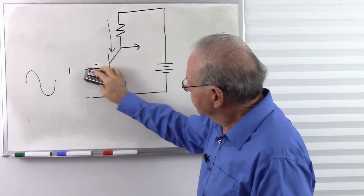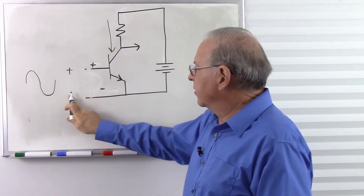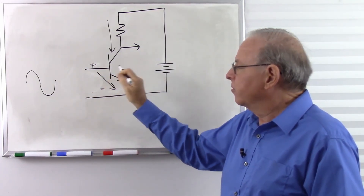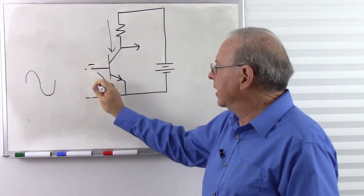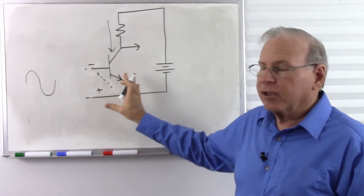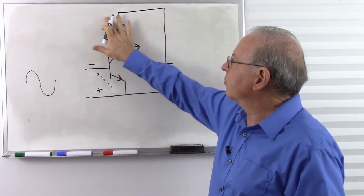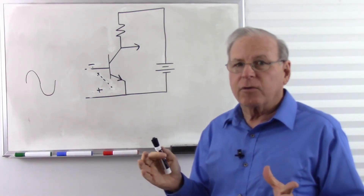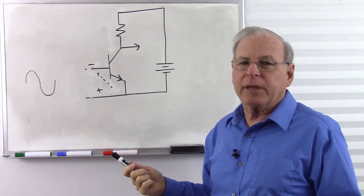So with alternating current: when we apply it positive to negative, current flows through the transistor, it turns on and we get current flow in the collector. But when we reverse that — negative to positive — the current attempts to flow in the opposite direction, but it can't because we have a reverse biased junction, so no current flows and the transistor is cut off. The quick answer is: when the emitter is positive compared to the base, the transistor is simply cut off and nothing happens.